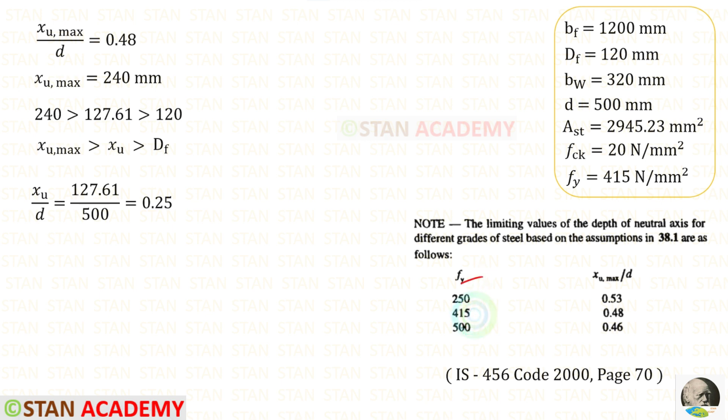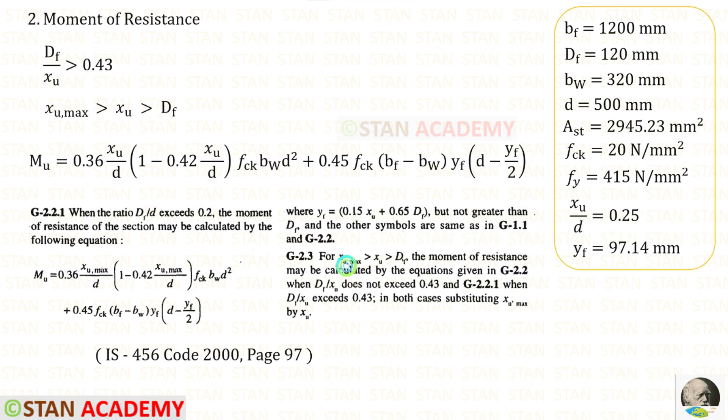For Fe415, XU max upon D is 0.48. D is 500, so 500 into 0.48 we will get 240. In our case XU max is greater than XU and XU is greater than DF. Let us find XU upon D. For that we will get 0.25. We will need it later while finding the moment of resistance for XU max greater than XU greater than DF.